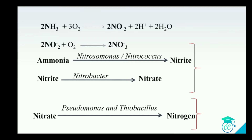Ammonia is first oxidized to nitrite and then to nitrate, and this conversion process is helped by various microorganisms. In the first step, ammonia is oxidized to nitrite with the help of microorganisms such as Nitrosomonas and Nitrococcus. While in the conversion of nitrite to nitrate, it is accomplished with the help of the microorganism known as Nitrobacter. This overall process is known as nitrification.